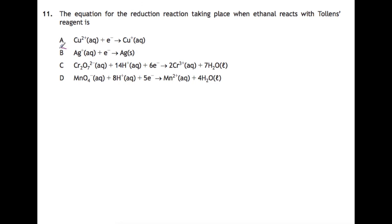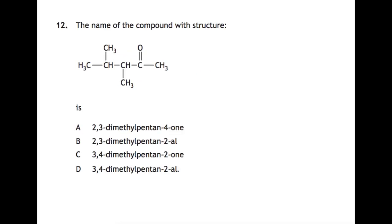Question 12: the name of the compound with this structure. I would just go about trying to name this. So the longest chain with the functional group is this one here through the middle—one, two, three, four, five. So we're numbering from right to left because this here needs to have the smallest number possible. So it's going to be based on pent, I've got all single bonds, so it's pentan.